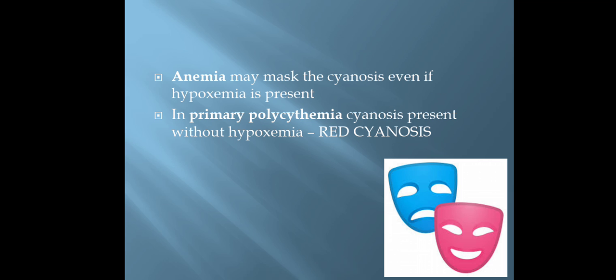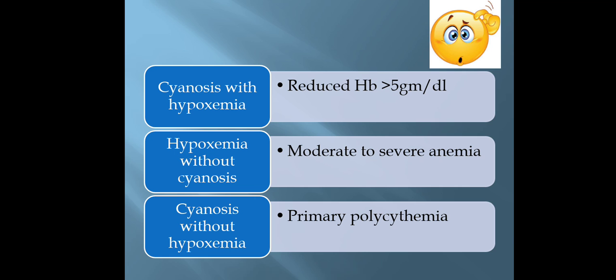Anemia may mask the cyanosis even if hypoxemia is present. In primary polycythemia, cyanosis is present without hypoxemia, and it is called red cyanosis. So there will be cyanosis with hypoxemia, hypoxemia without cyanosis, and cyanosis without hypoxemia. Cyanosis with hypoxemia occurs when reduced hemoglobin is more than 5 gram per deciliter. Hypoxemia without cyanosis occurs in case of moderate to severe anemia, and cyanosis without hypoxemia in case of primary polycythemia.